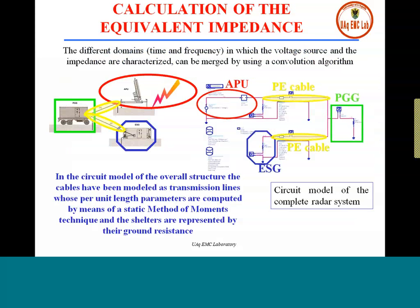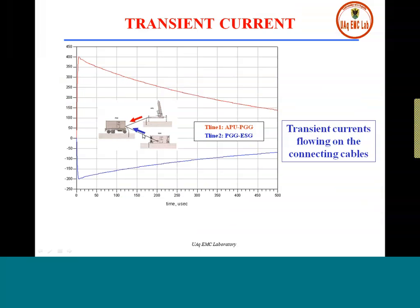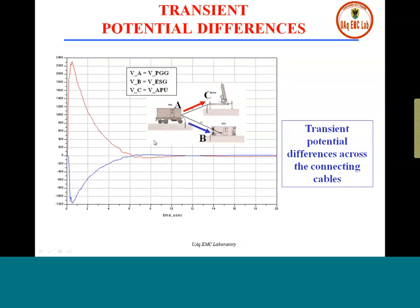Finally, we populate the ADS schematic, where the cable is modeled as a transmission line. Here you have the cable, the generator, the shelter, and the antenna. In ADS, we simulate the transient current flowing in the cables: in red the current from the antenna to the generator, and in blue the current from the shelter to the generator. We see a 400-ampere peak current. We also calculate the differential potential: in red between the generator and the antenna, in blue between the generator and the shelter — showing a 2200-volt difference of potential, which should be zero volts.